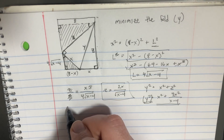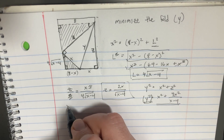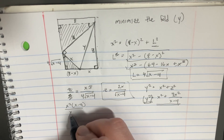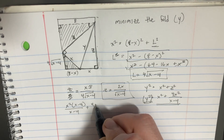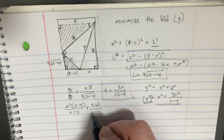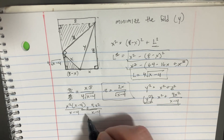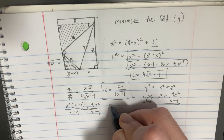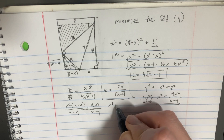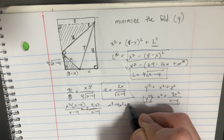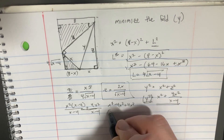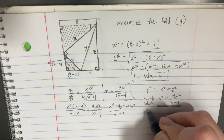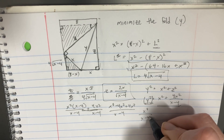So let's minimize this function here. First we rearrange, so we've got x squared times (x minus 4) divided by (x minus 4), and then we'll add 4x squared divided by (x minus 4), so we've got it on the same denominator here. We'll end up with x cubed minus 4x squared plus 4x squared over (x minus 4), giving us x cubed over (x minus 4).